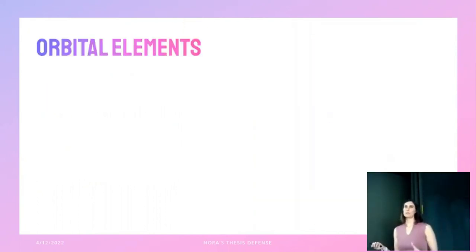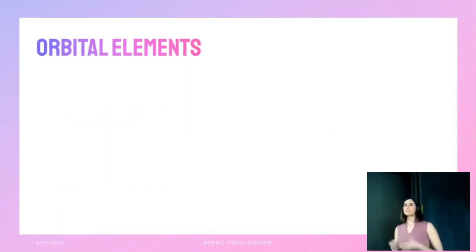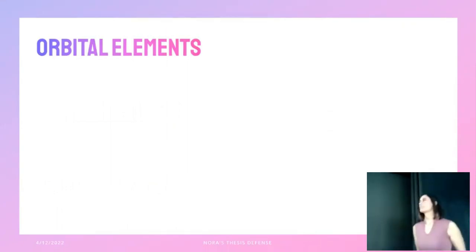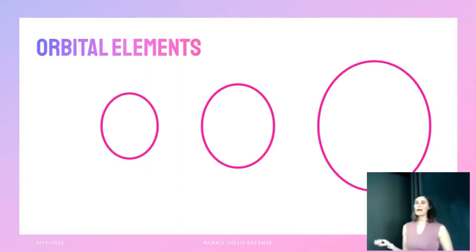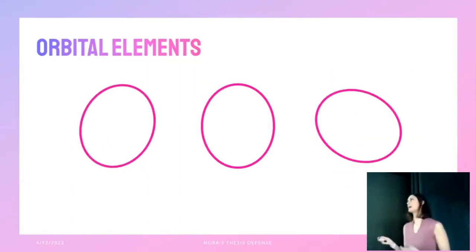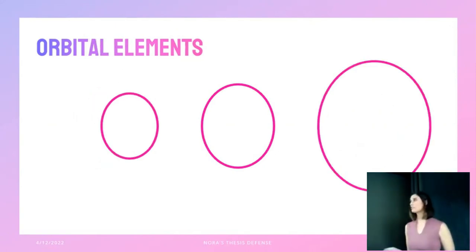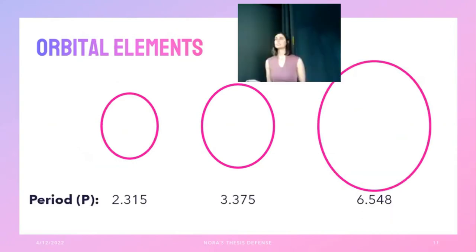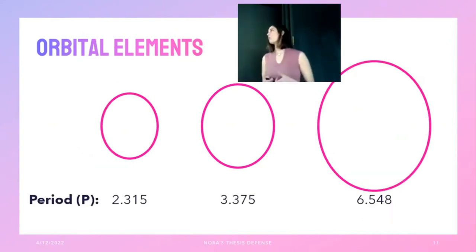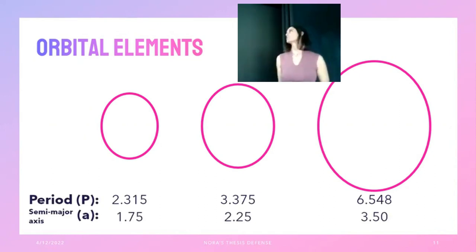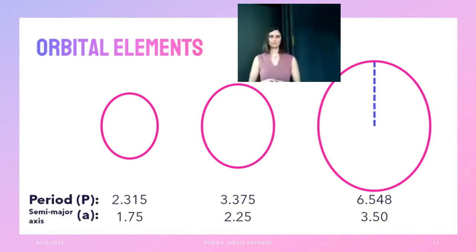From Kepler we know that an orbit is an ellipse, and we can define it by six independent orbital elements that tell us how big the ellipse is, how circular it is, and how it's tilted and oriented in three-dimensional space. For how big the ellipse is, we need to know either its period — how long it takes the planet to go around once — or its semi-major axis, which is half the long diameter of the ellipse.